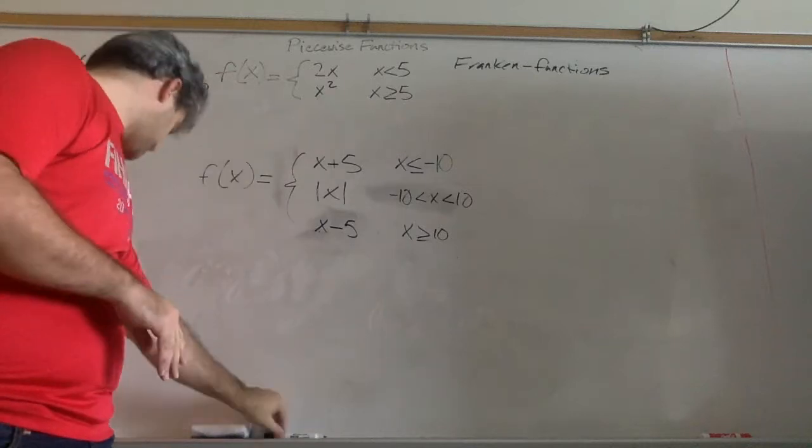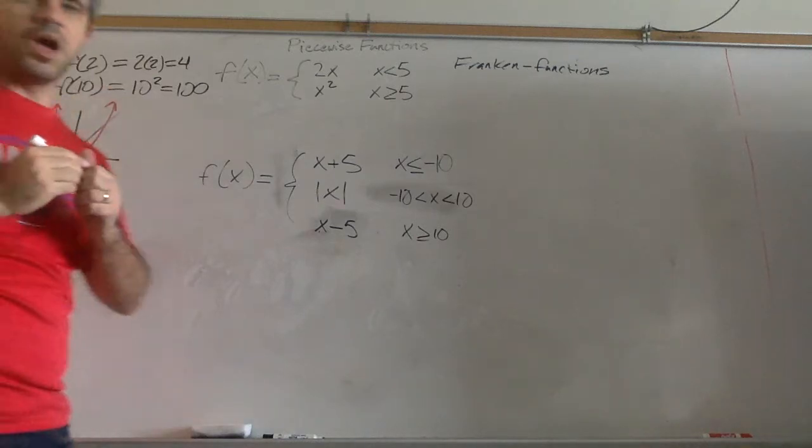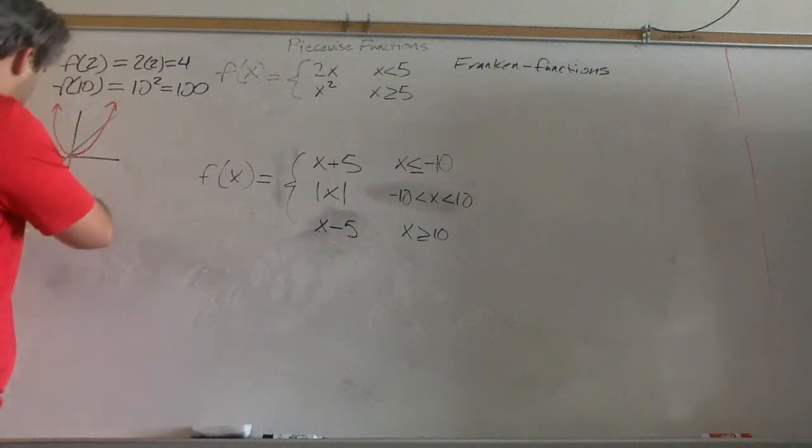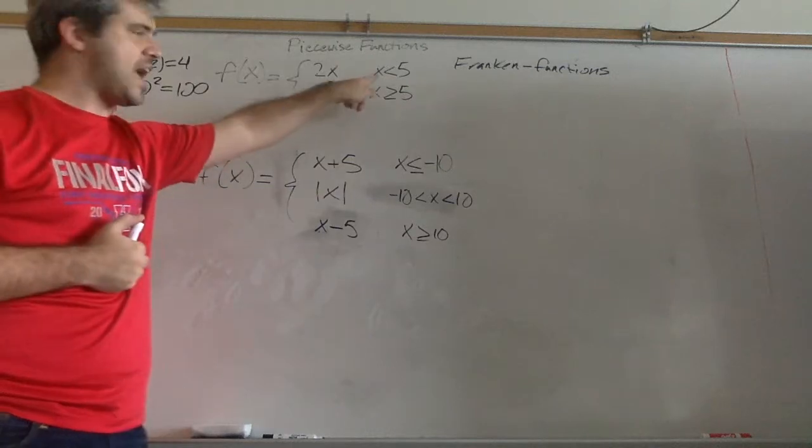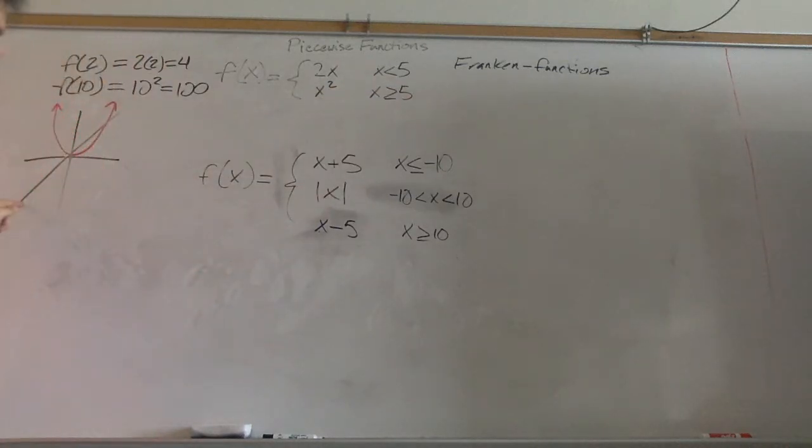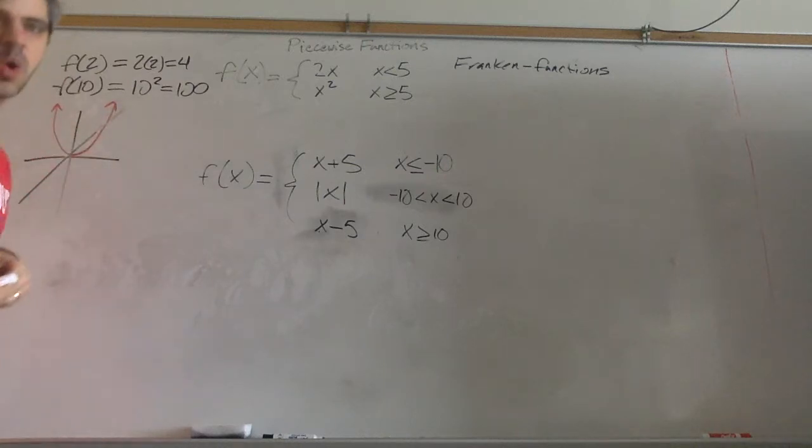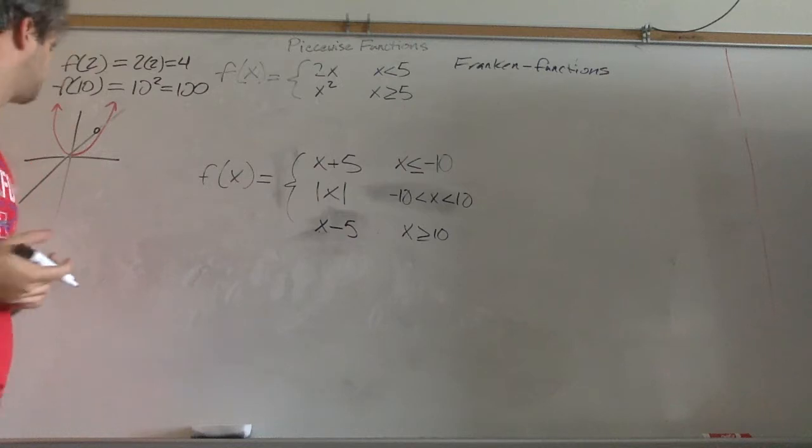The other graph is x squared. So these are two separate functions here. This first one is 2x. We're going to be following this rule as long as x is less than 5. We've got this graph and that graph, and then as soon as x is 5, we're not going to follow that rule anymore. We're going to stop right here where x equals 5.